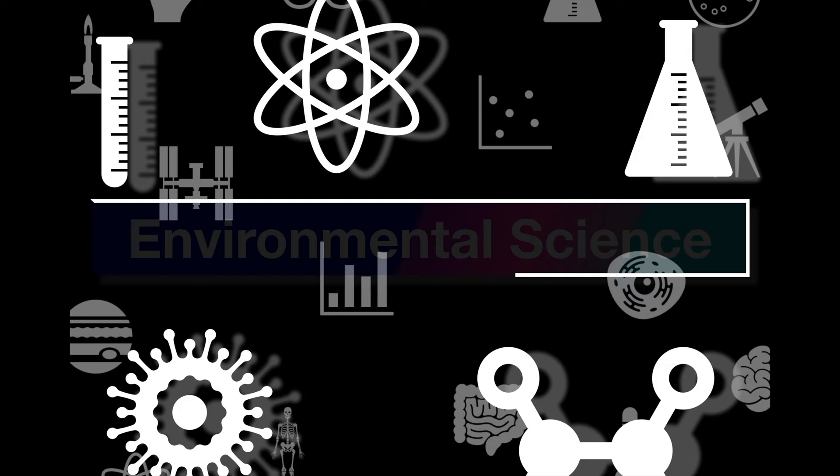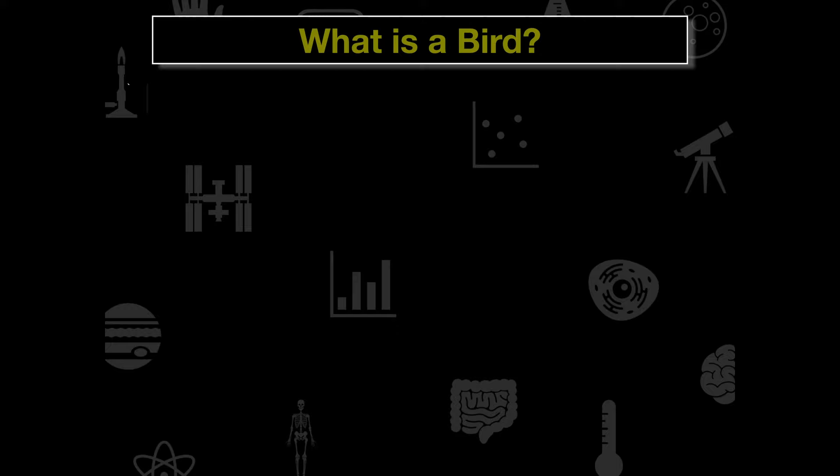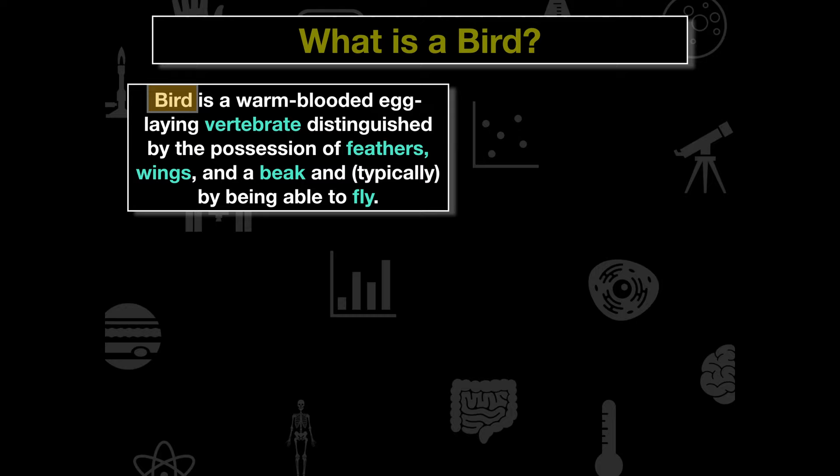This is our next video on environmental science, specifically looking at bird anatomy. A bird is a warm-blooded, egg-laying vertebrate distinguished by the possession of feathers, wings, and a beak.